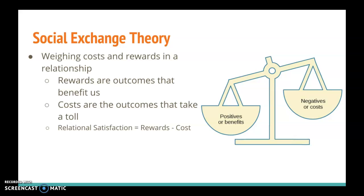However, that being said, we all do become aware of the balance in the costs and rewards in our relationship at some point. But this awareness is not super persistent. We tend to become more aware of this relationship between rewards and costs when things are out of balance — it usually only becomes a problem when the costs start to outweigh the rewards. So we start to become more aware of this imbalance when we are going through a conflict in the relationship.